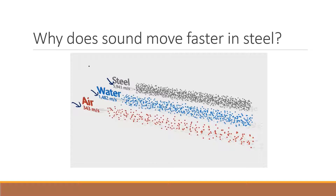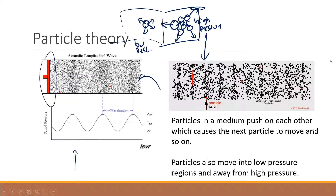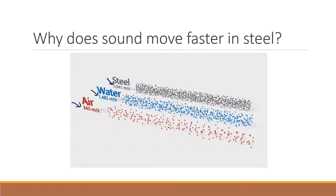Why does sound move faster in steel? The particles in steel are closer together — they're packed more densely. Remember, the whole way sound moves is by one particle crashing into another. So if those particles are packed right next to each other, it makes sense that the sound will travel really quickly. With water and air, because the particles aren't packed as closely, it takes longer for you to hear it.